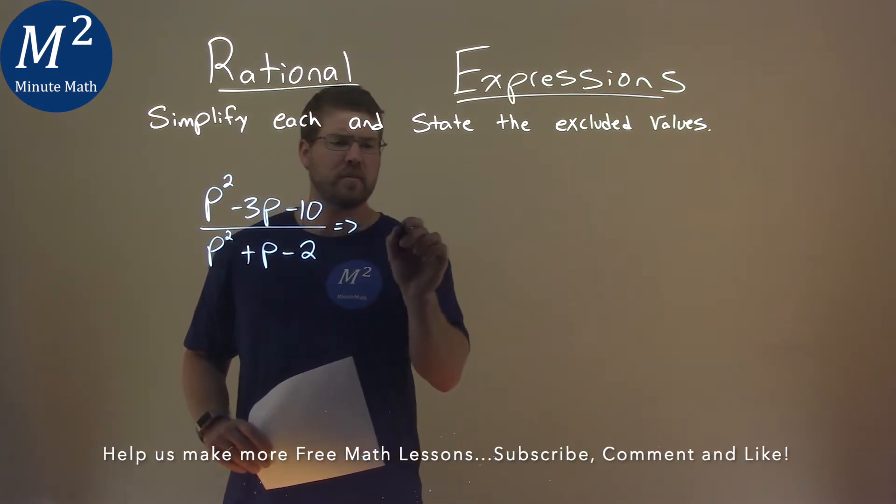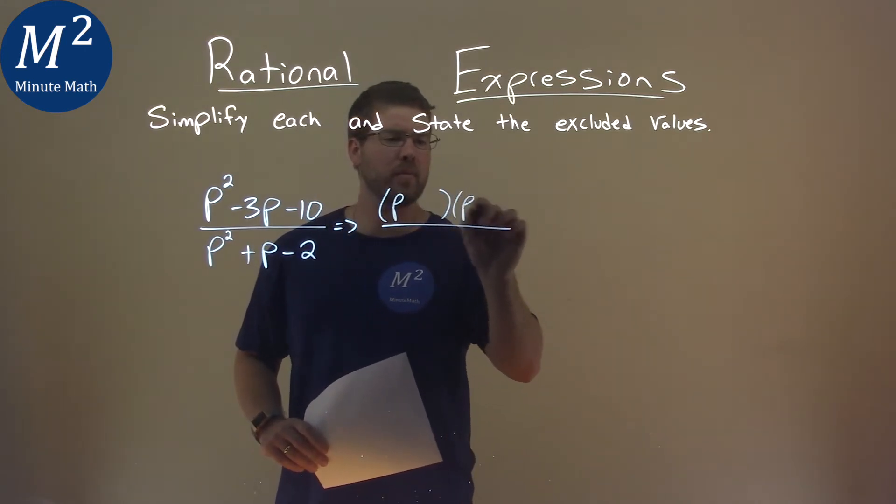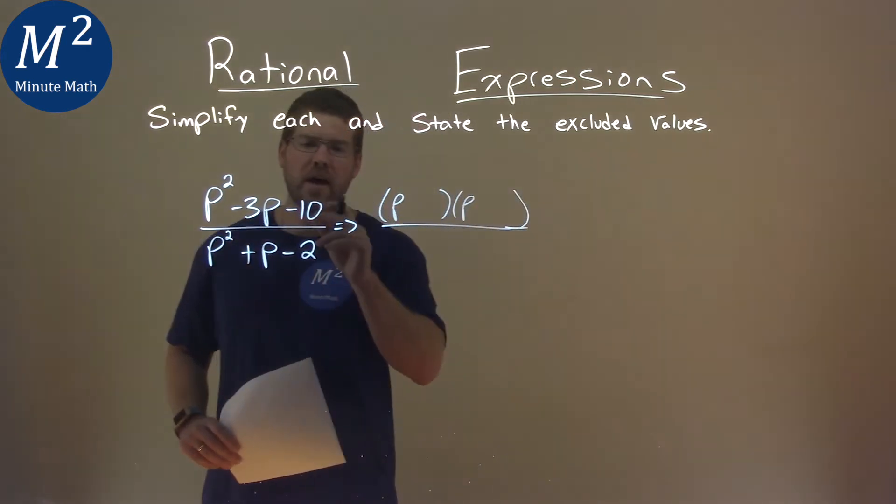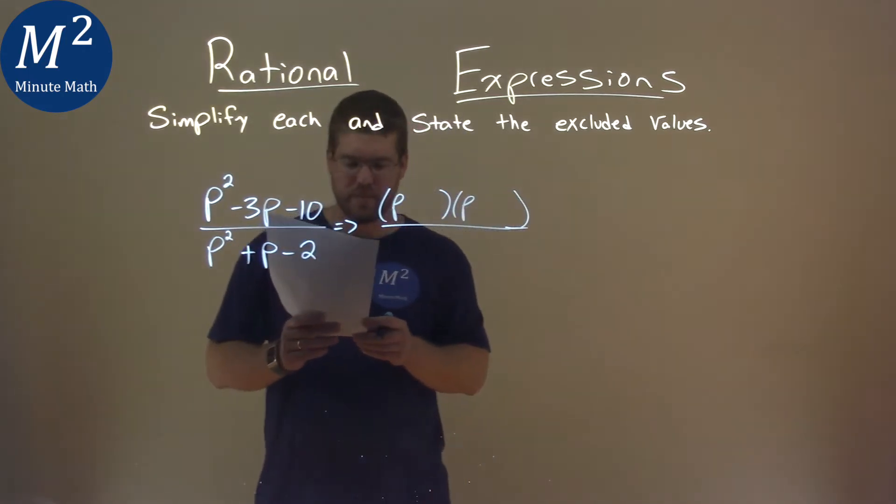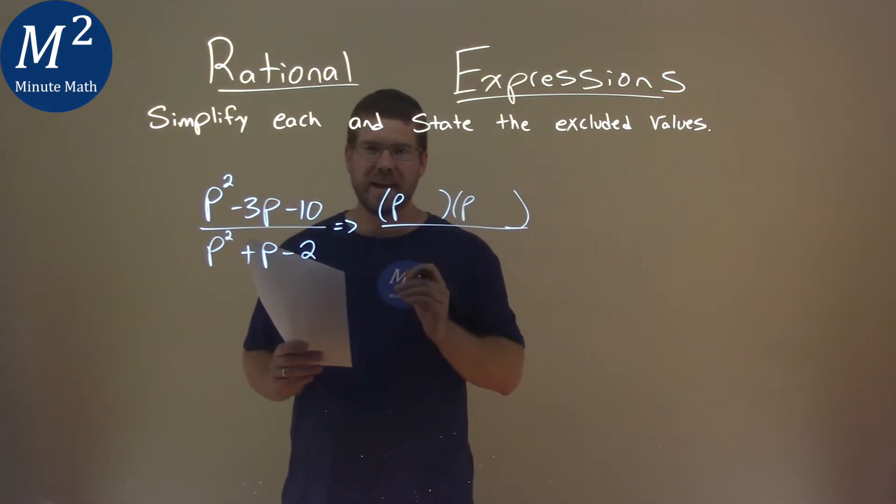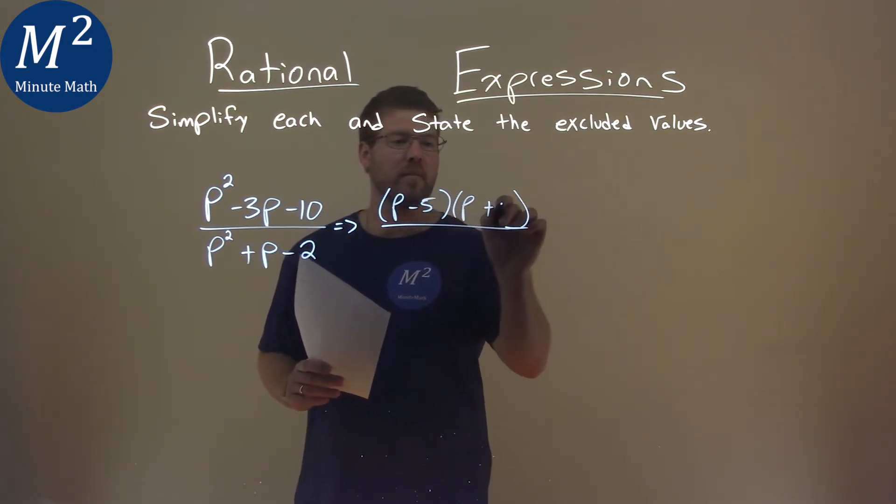Let's simplify this and factor the numerator. We know it's in some form of p like this and another p. And we have to ask ourselves what two numbers multiply to be negative 10 but add to be negative 3. Well that's going to be negative 5 and positive 2, minus 5 and plus 2 here.